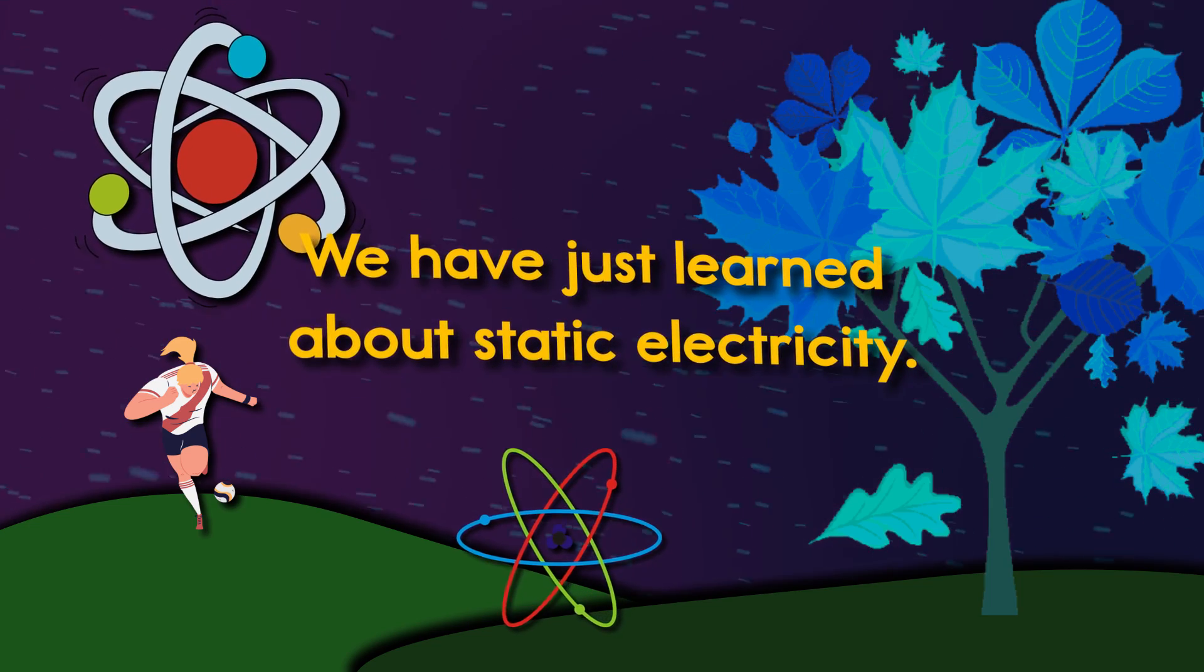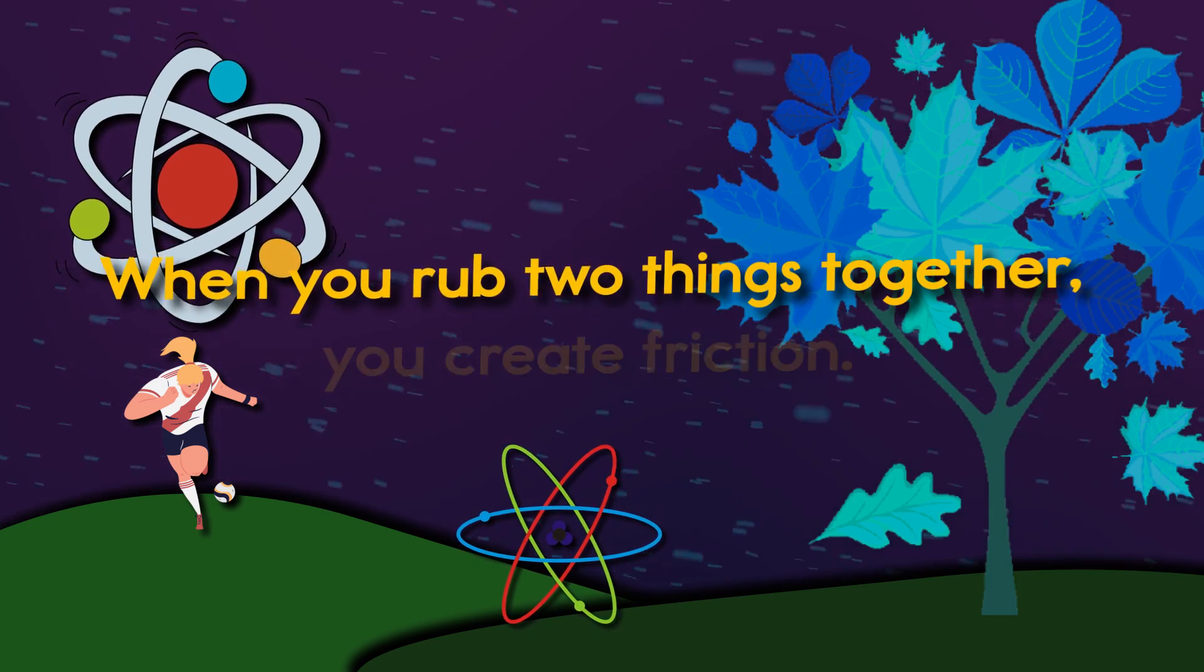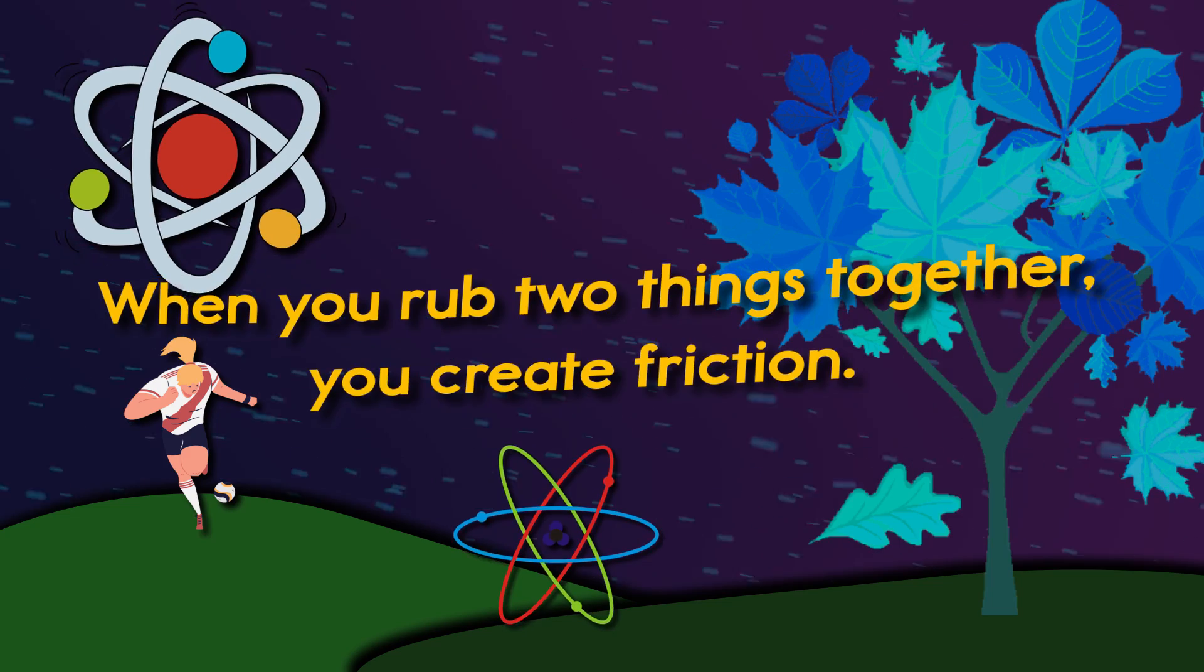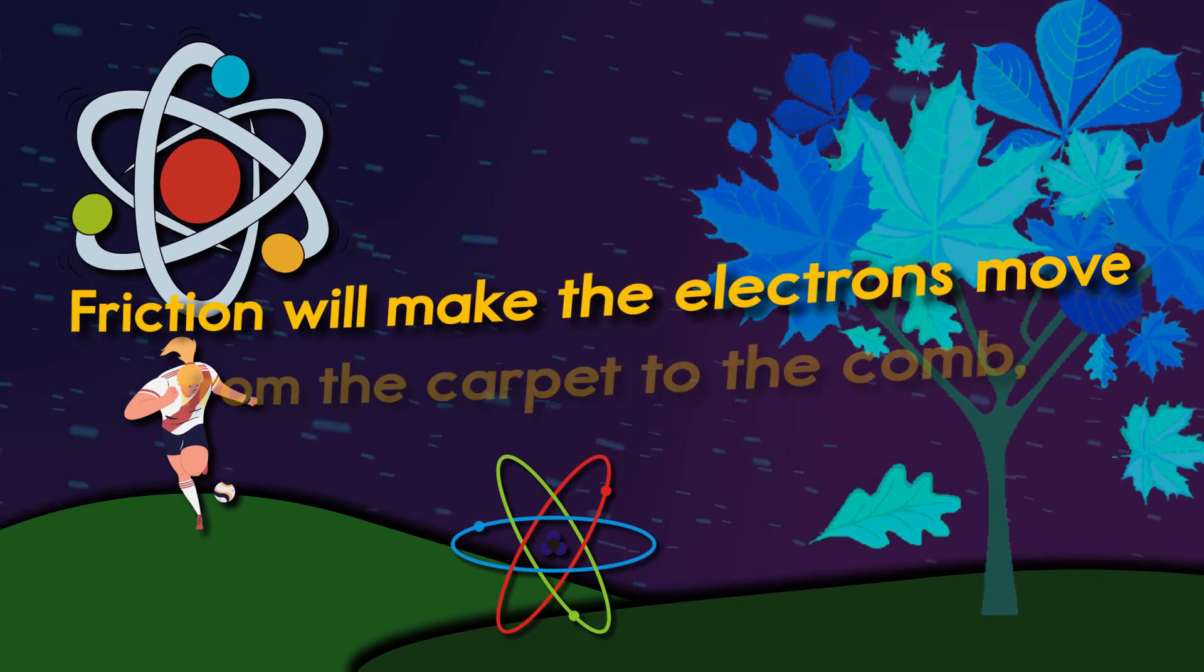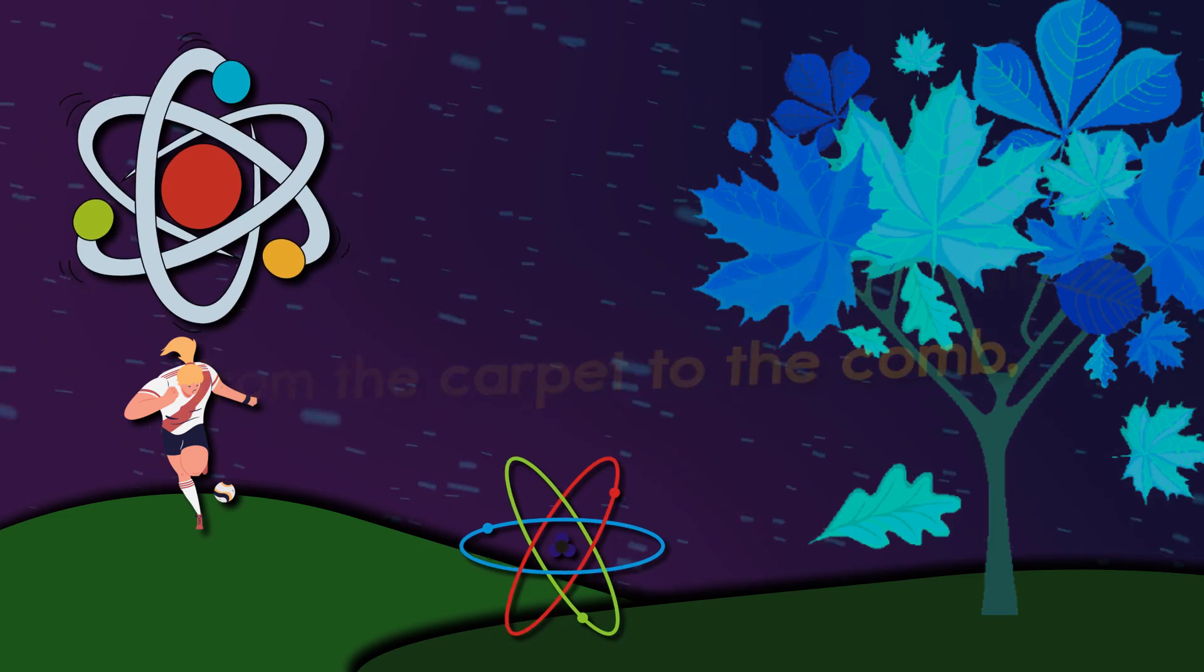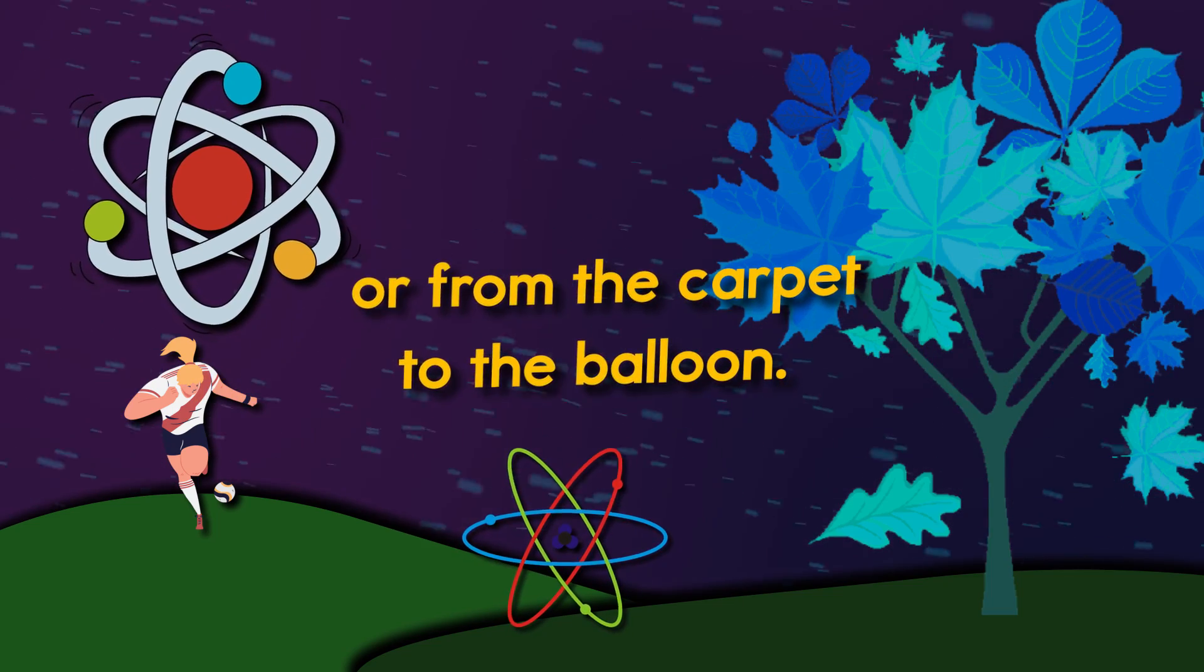We have just learned about static electricity. When you rub two things together, you create friction. Friction will make the electrons move from the carpet to the comb, or from the carpet to the balloon.